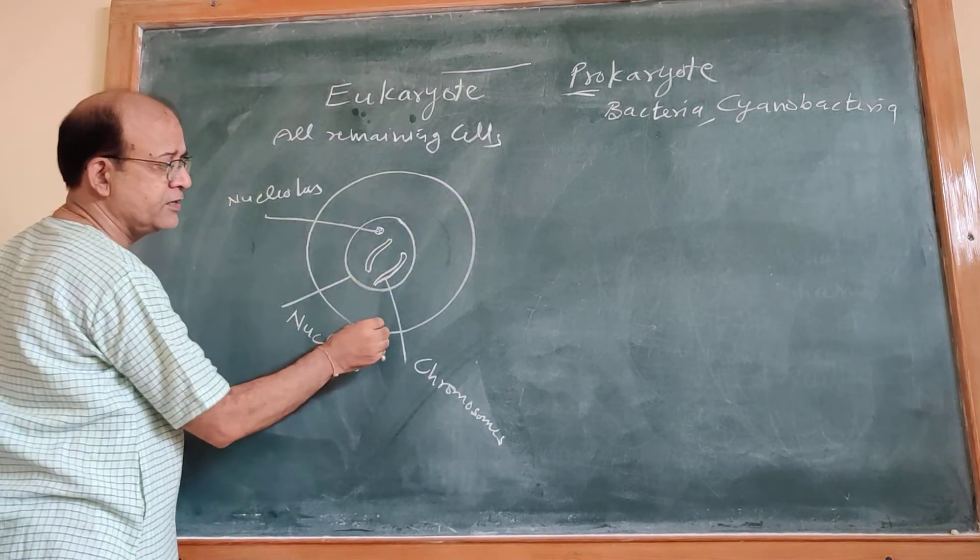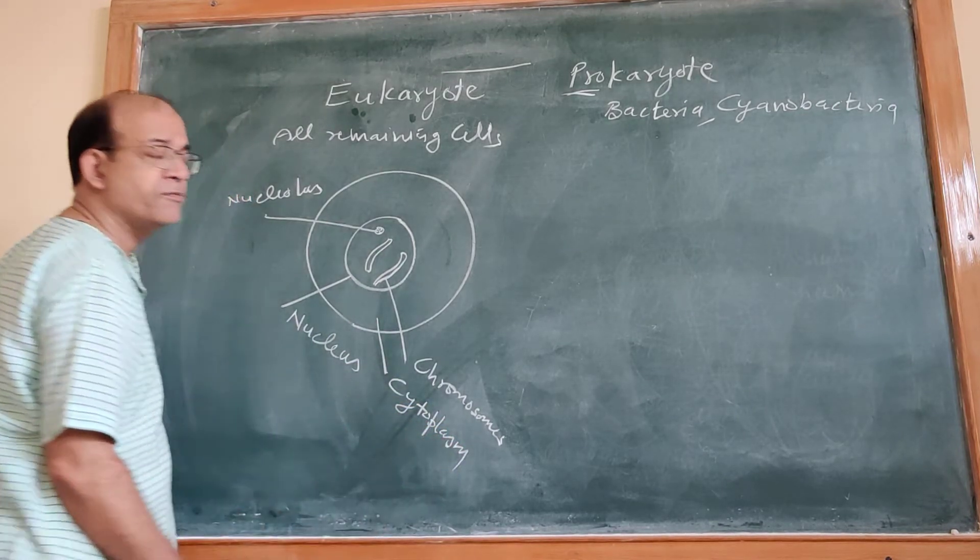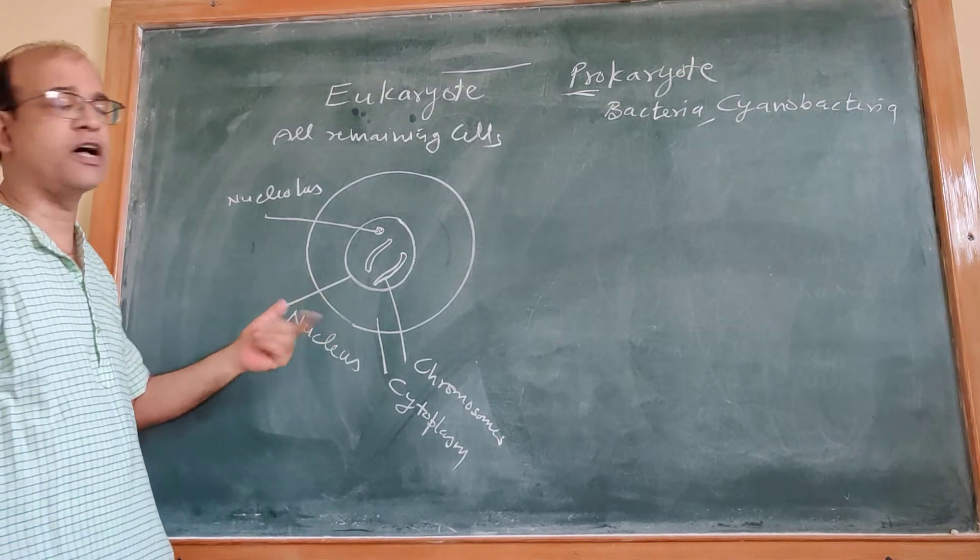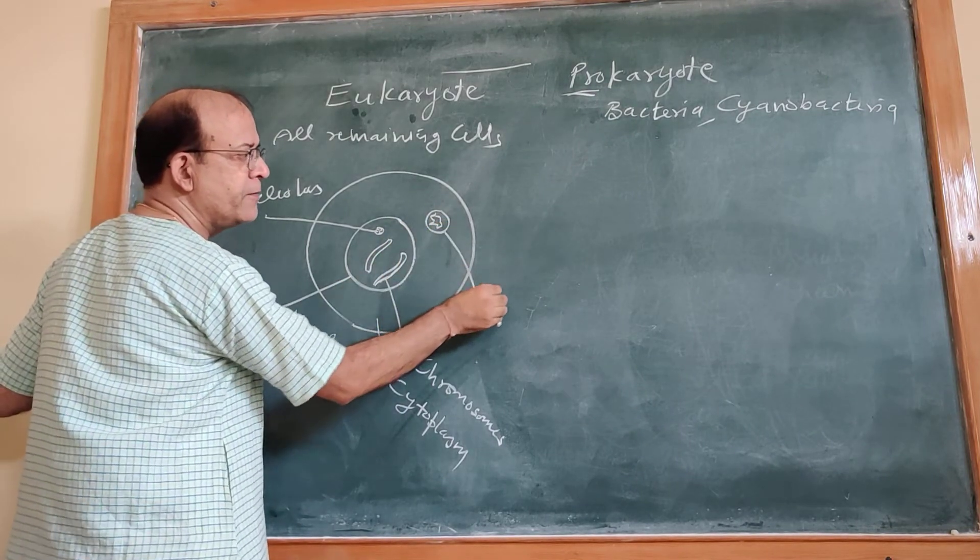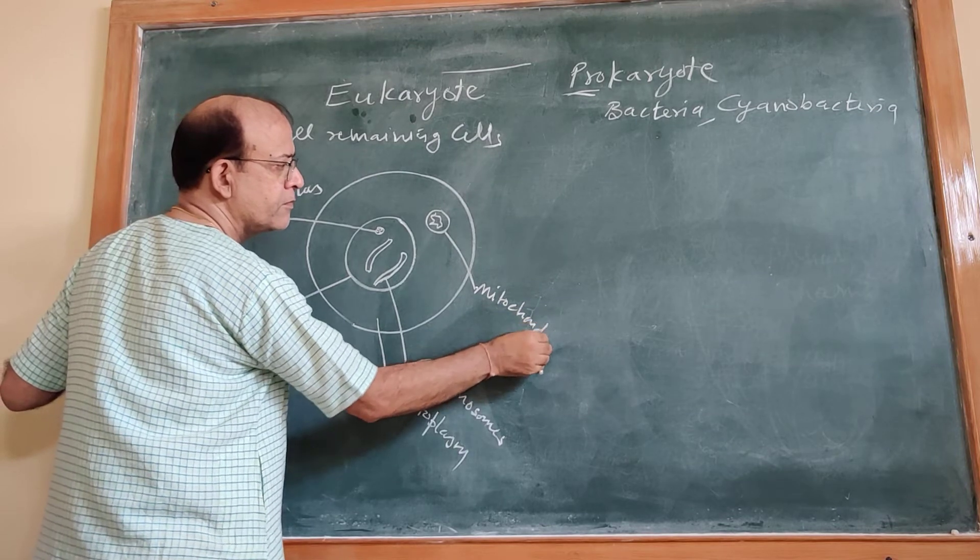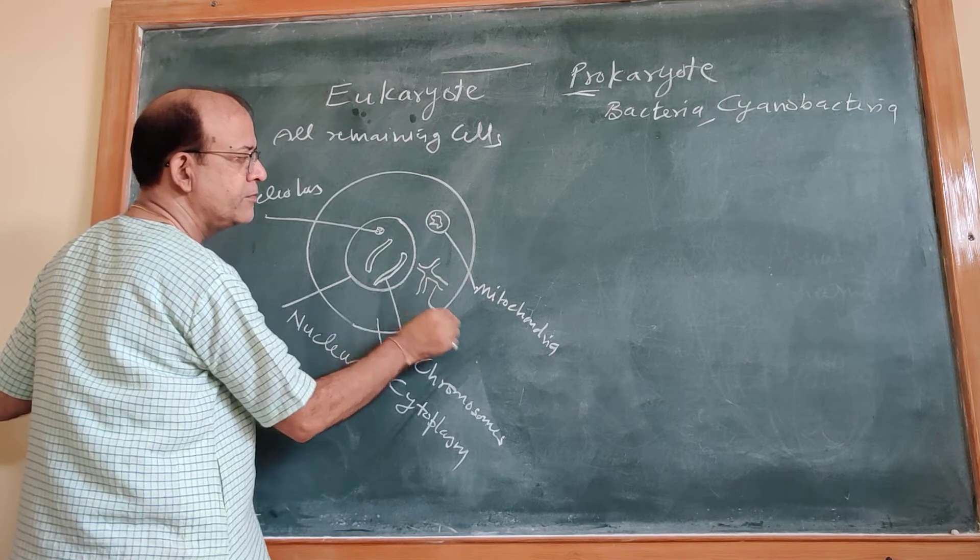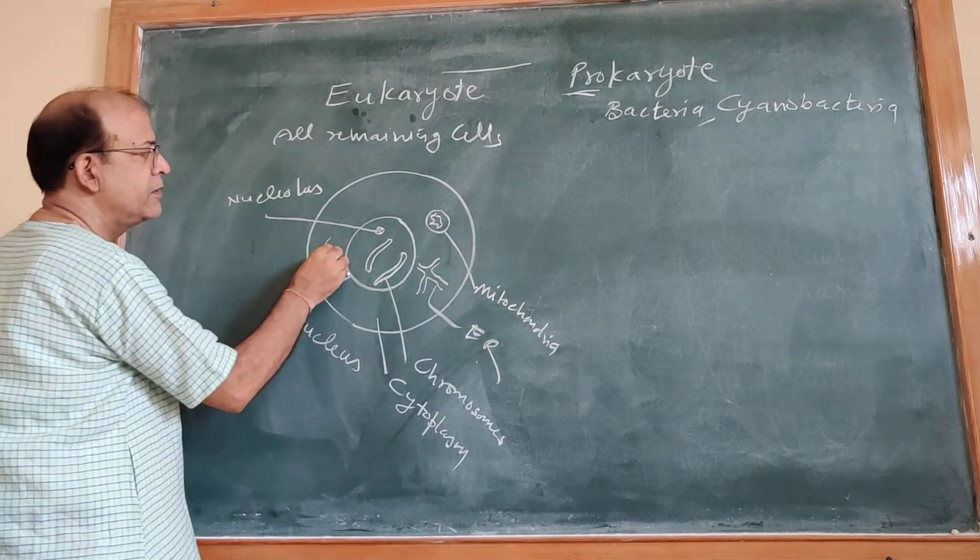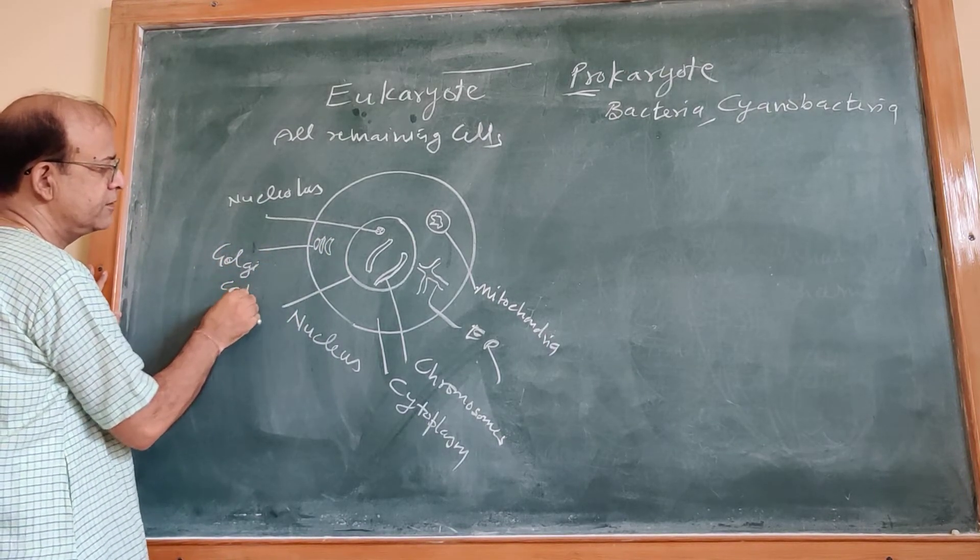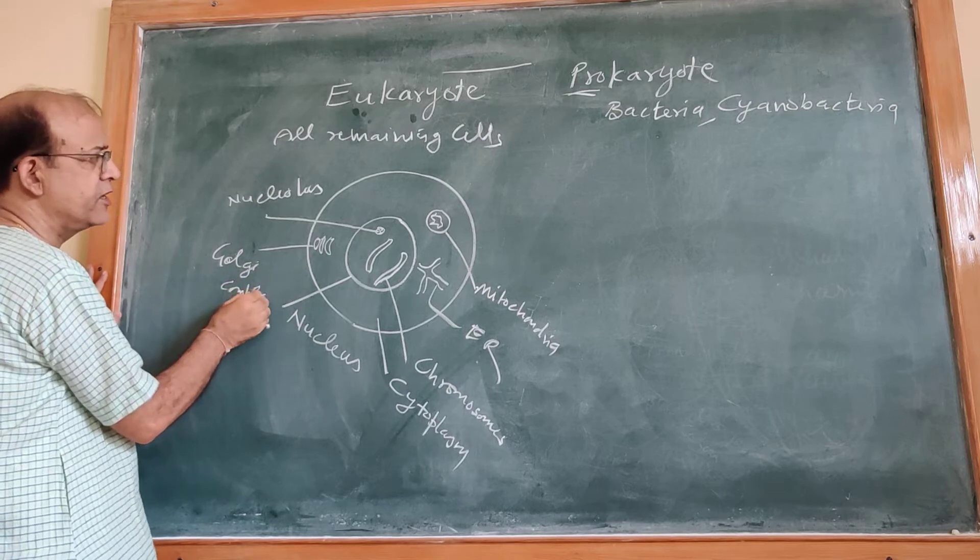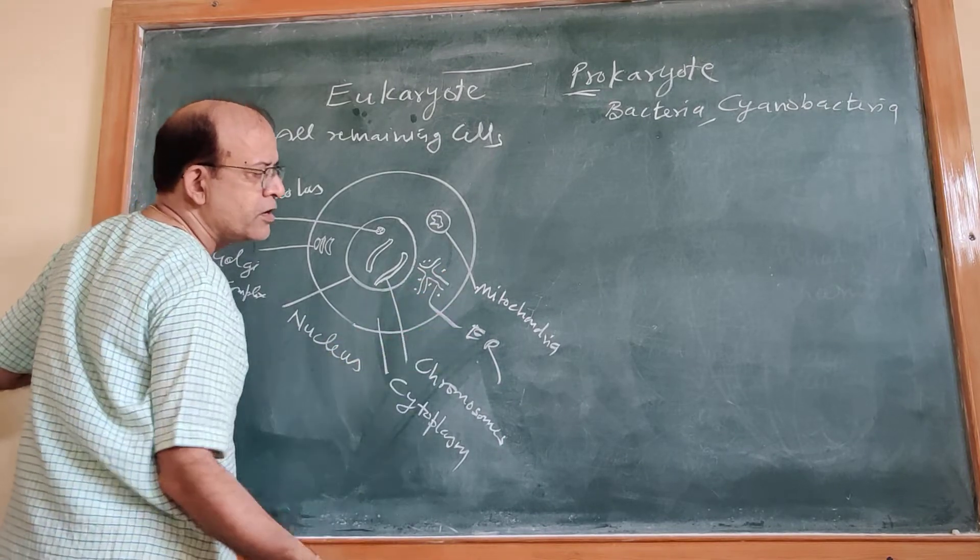The rest of the part is cytoplasm. In this cytoplasm, various organelles are present. Mitochondria, endoplasmic reticulum, Golgi complex, etc. And some particles are there. And these particles are called ribosomes.